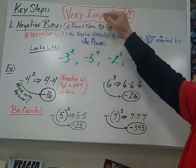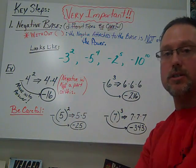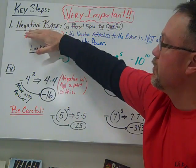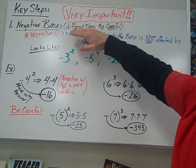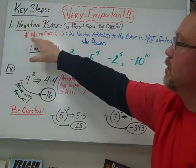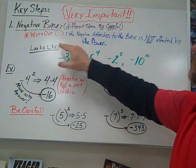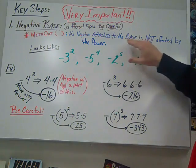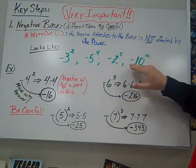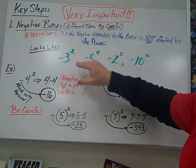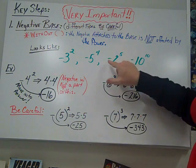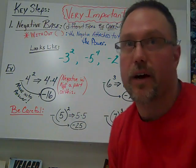Some key steps. Very important to this because it's going to take you through a lot of the problems that we're going to do. We're going to start with the first one as a negative base. There's going to be different types of these, so be careful. We're going to start without parentheses. Negative is attached to the base, is not affected by the power. So these are some of the ones that it's going to look like. Negative three squared, negative five to the fourth, negative two to the fifth, negative ten to the tenth. The negative out here is not affected.